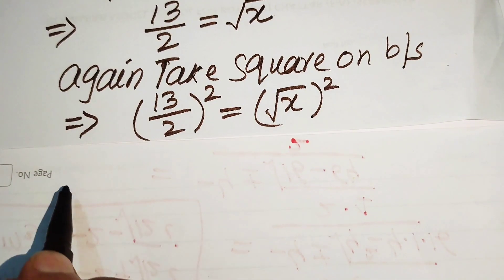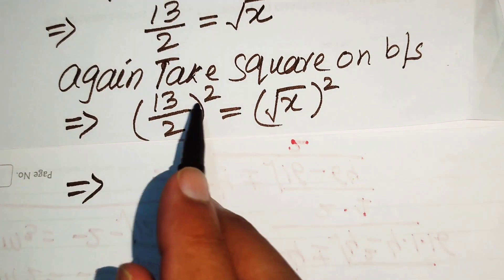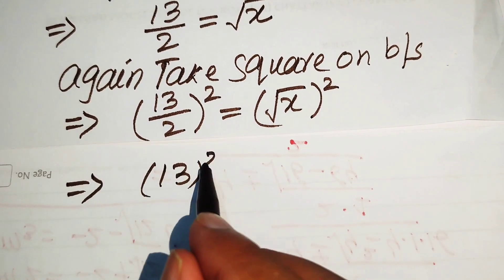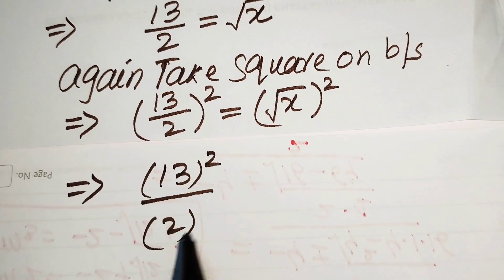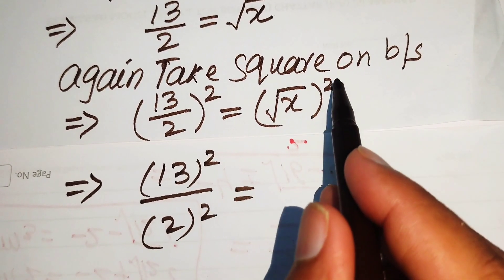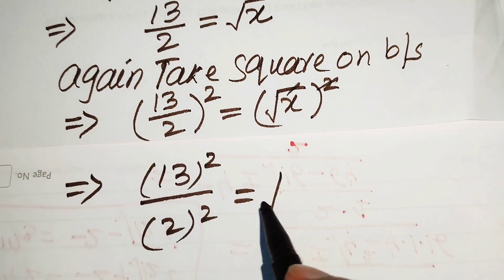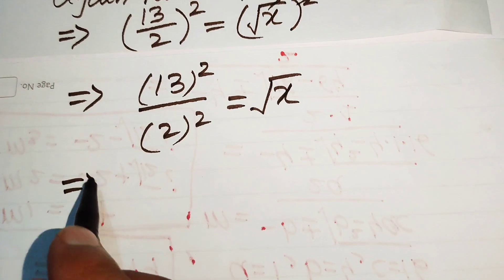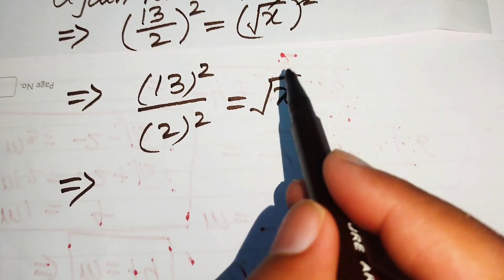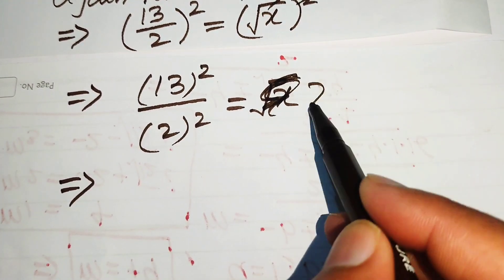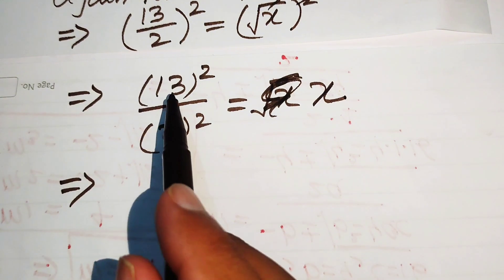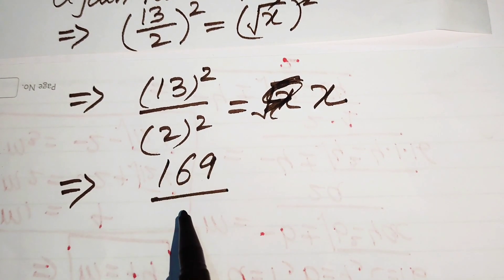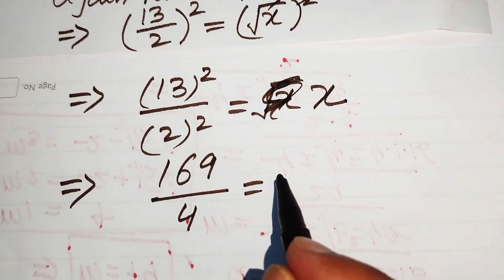We apply the square to numerator and denominator: 13 squared divided by 2 squared. The square and square root cancel on the right, leaving only x. Since 13 squared equals 169 and 2 squared equals 4, we get x equals 169 over 4. This is the solution of the given equation.